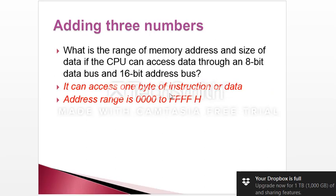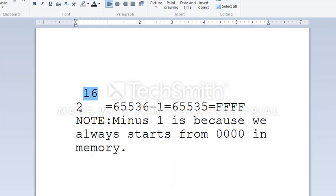Many of you may be confused about how these numbers come about. Simply: an 8-bit data bus means it can take 8 bits of data at a time, and 8 bits equals one byte. For the 16-bit address bus, it can address 2 to the power of 16 memory locations, which equals 65,536. Minus 1 equals 65,535, which equals FFFFh.